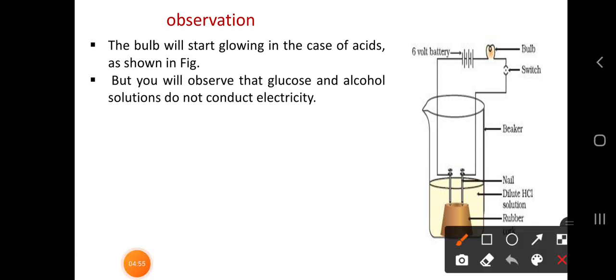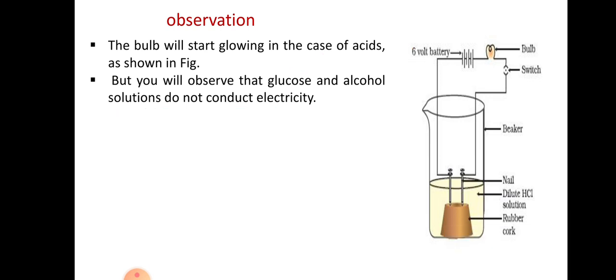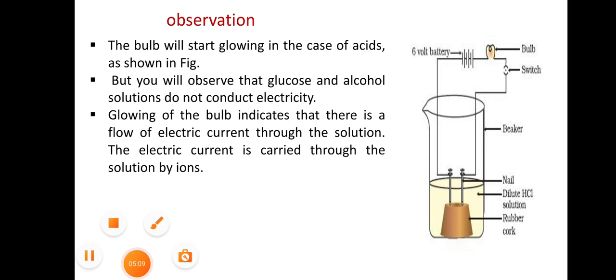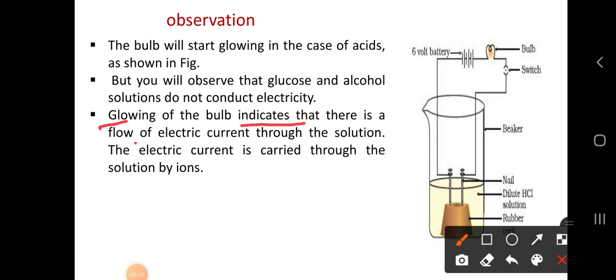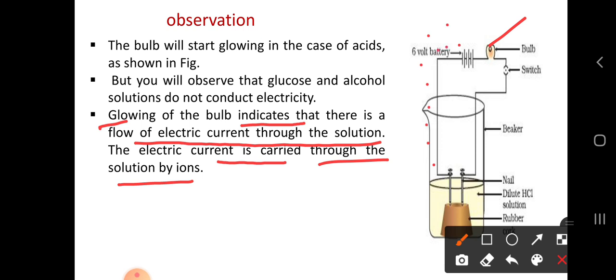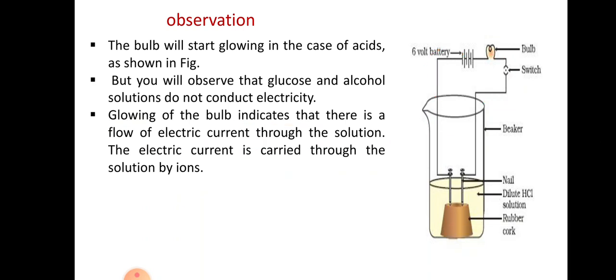However, glucose and alcohol solutions do not conduct electricity — they are not good conductors. The glowing of the bulb indicates that there is a flow of electric current through the solution, and the electric current is carried through the solution by ions. The glowing means there is a flow of current in this connection, which is why the bulb is glowing. This current is carried out through ions.